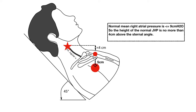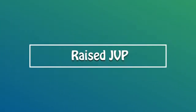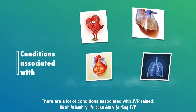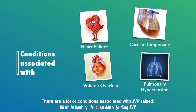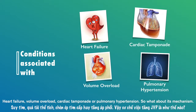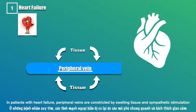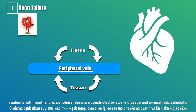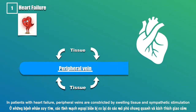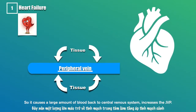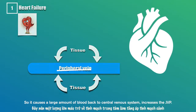Let's move to the first part: raised JVP. There are a lot of conditions associated with raised JVP — heart failure, volume overload, cardiac tamponade, or pulmonary hypertension. In patients with heart failure, peripheral veins are constricted by swelling tissue and sympathetic stimulation, causing a large amount of blood to return to the central venous system, which increases the JVP.